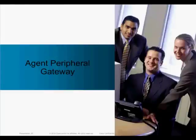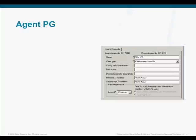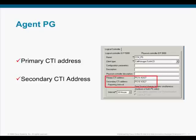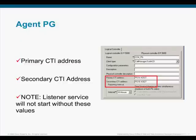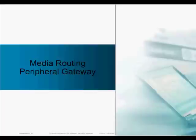Agent Peripheral Gateway. In this section, I am only going to highlight the configuration points specific to this integration. The SIM listener service is receiving agent events from the CTI server. When an agent is connected through a CTI server rather than a peripheral, you need to configure the CTI address on the PG. From the Agent PG logical controller configuration, provide the primary address and port of the CTI server. If the PG is redundant, then configure the secondary CTI address and port. An important note: the SIM listener service will not go active without these values.